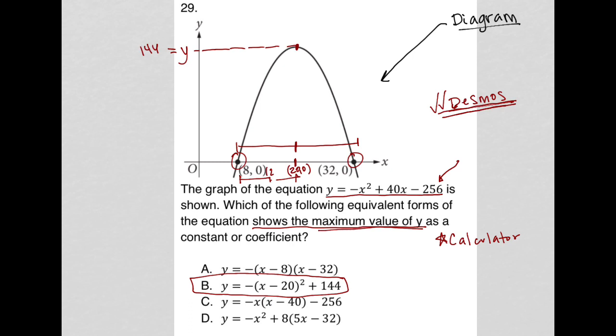And just go to Desmos, literally type this equation in, negative x squared plus 40x minus 256, graph it, trace up to the high value for y. It'll tell you that that's at 144.